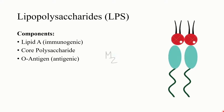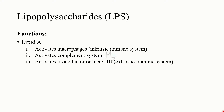How does LPS cause infection in human beings? It is because of lipid A. Lipid A has three important functions: number one, it activates macrophages — it is part of the intrinsic immune system; number two, it activates the complement system; and number three, lipid A activates tissue factor, which is factor 3.